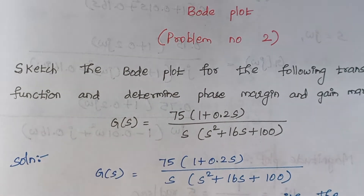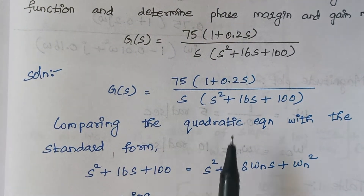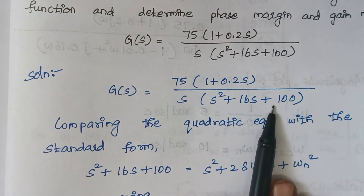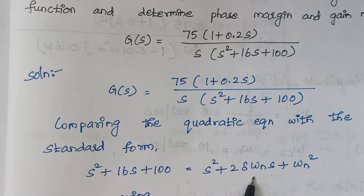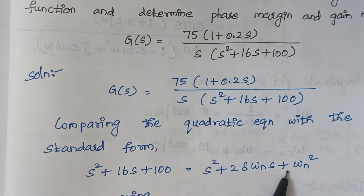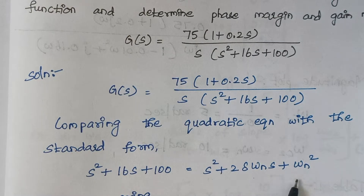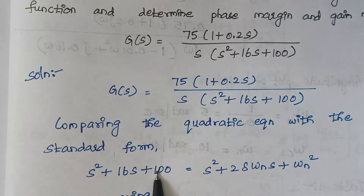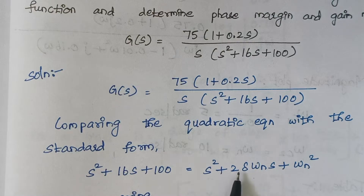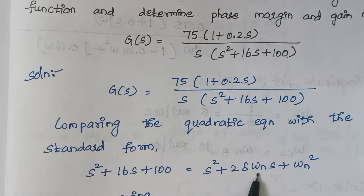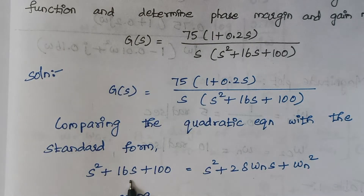The first step is comparing the denominator — this quadratic expression — with the standard format, which we had already seen in our second unit. The standard form is s² + 2ζωₙs + ωₙ². Comparing the two equations: ωₙ² is equal to 100, and 2ζωₙ is equal to 16, that is the coefficient of s.